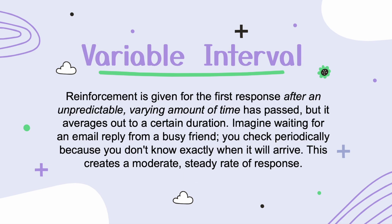Next, let's talk about variable interval. This type of reinforcement is given for the first response after an unpredictable, varying amount of time has passed, but it averages out to a certain duration. Imagine waiting for an email reply from a busy friend — you check periodically because you don't know when exactly it will arrive. This creates a moderate, steady rate of response.